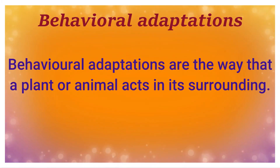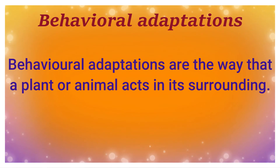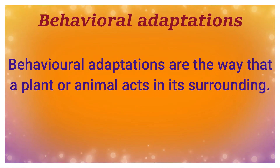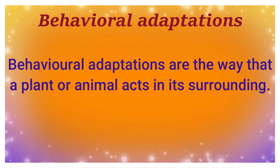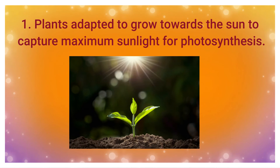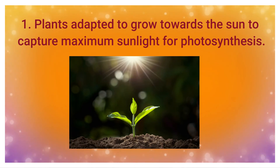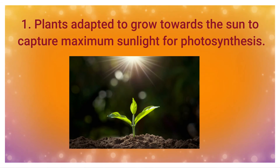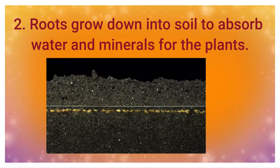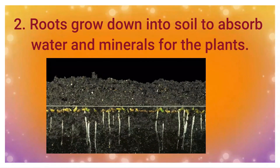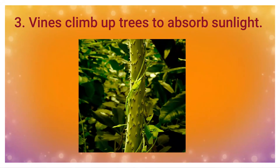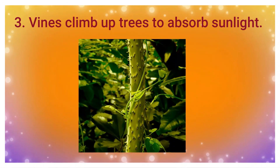Next is behavioral adaptations. Behavioral adaptations are the way that a plant or animal acts in its surroundings. For example, to get food, plants are adapted to grow towards the sun to capture maximum sunlight for photosynthesis. Roots grow down into the soil to absorb water and minerals. Vines climb up trees to absorb sunlight.